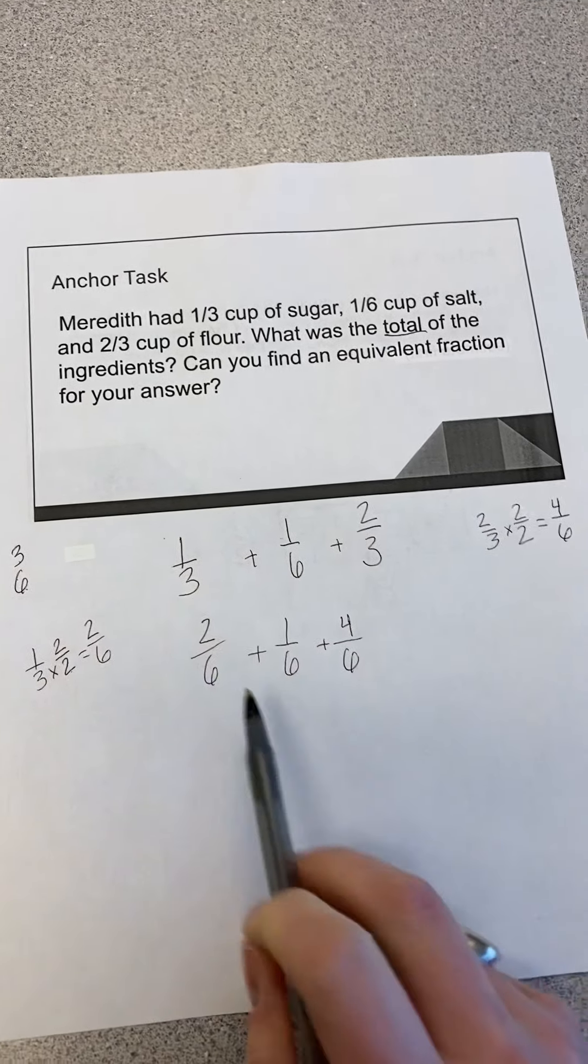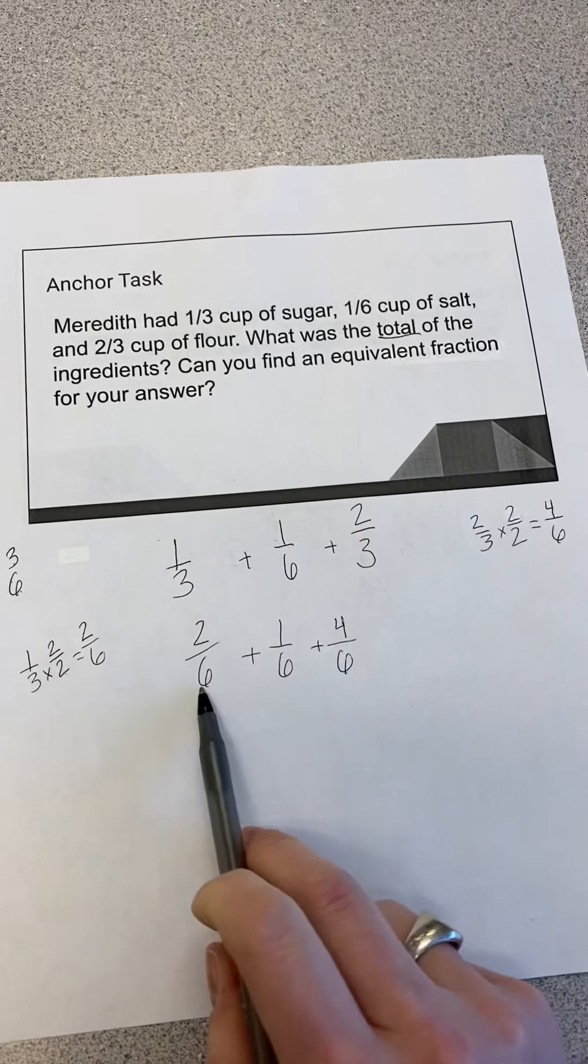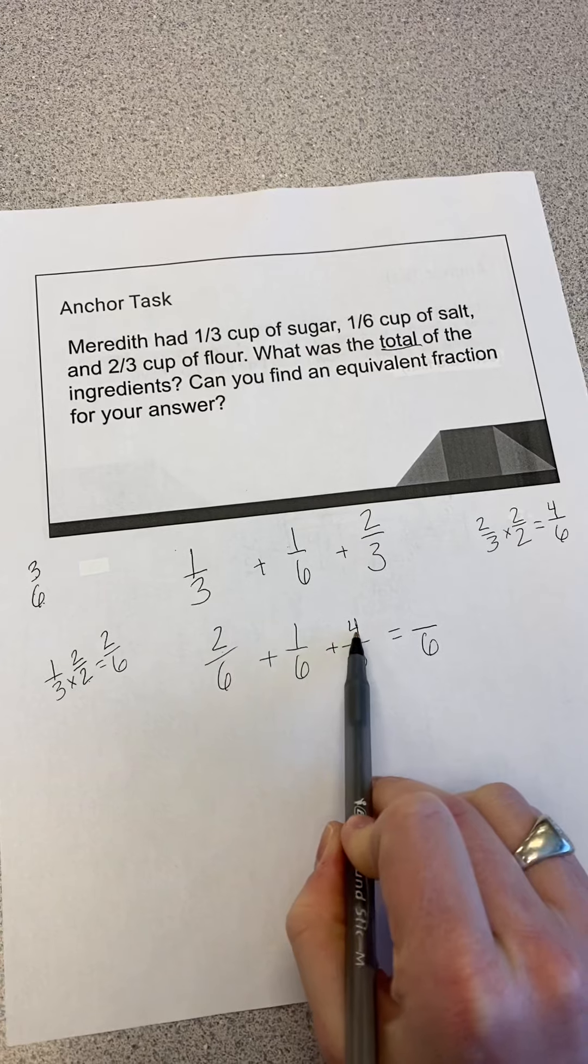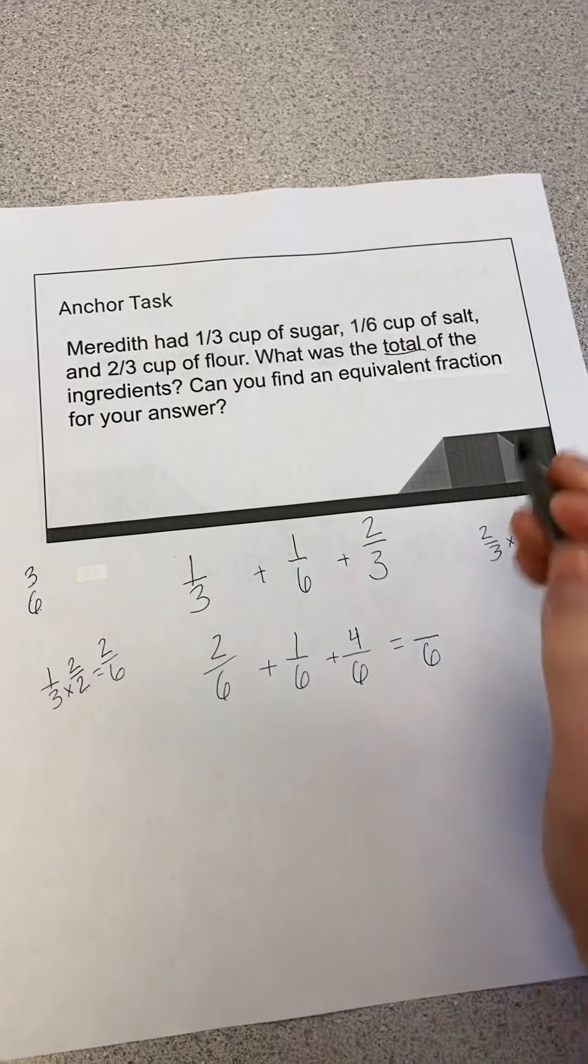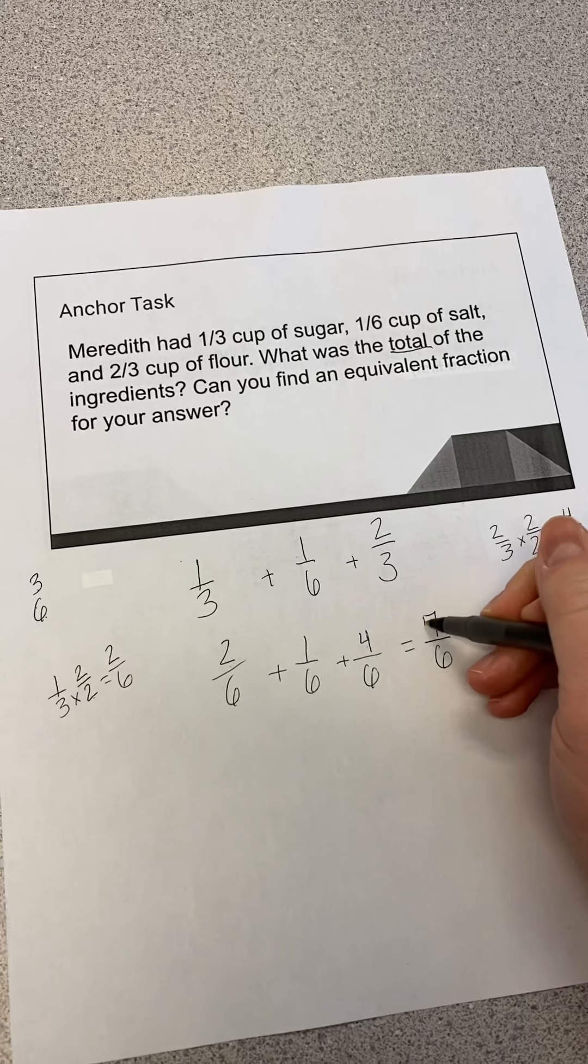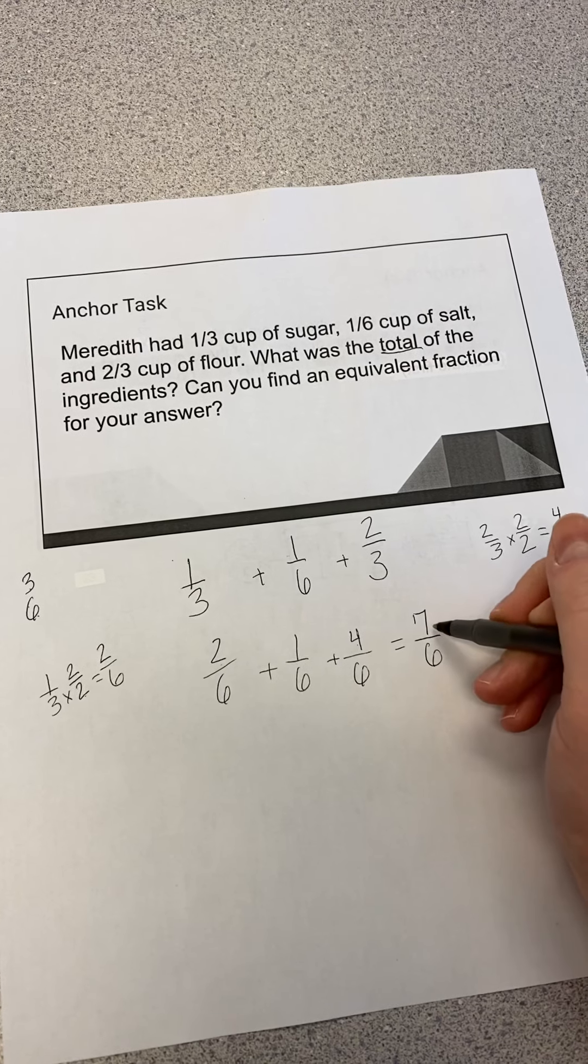Remember when we add fractions, we keep the denominator the same once we have found that common denominator, and we just add the numerators. So one and four is five, five and two more is seven. So I can leave this as an improper fraction.